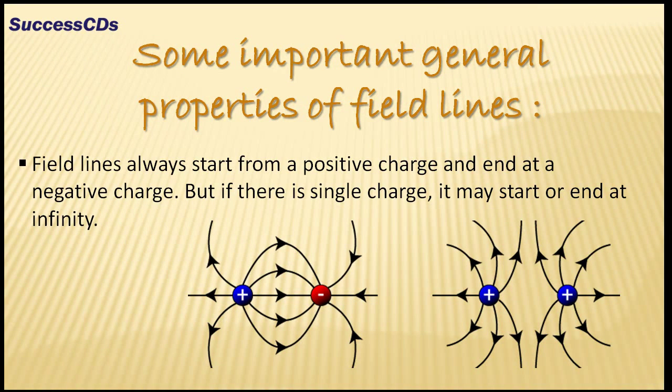Some important general properties of field lines: The first is field lines always start from a positive charge and end at a negative charge as shown in the figure. But if there is a single charge it may start or end at infinity.